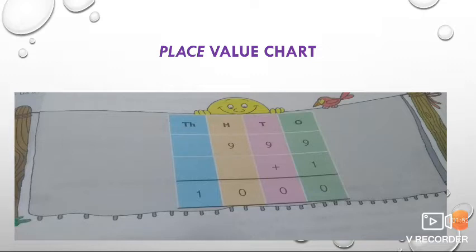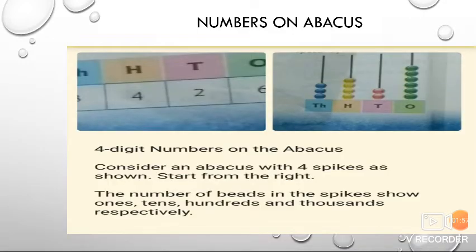Now, moving towards our next topic: numbers on abacus. An abacus is an instrument made of beads and spikes which is used for calculation. Consider an abacus with 4 spikes as shown. Starting from the right, the number of beads on the spikes shows 1s, 10s, 100s, and 1,000s respectively.